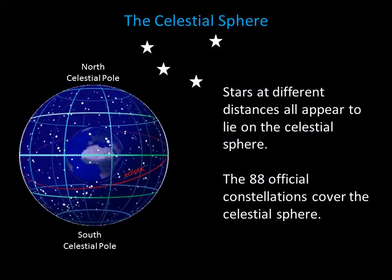To talk about the positions of objects in the sky, we're going to use a conceptual model. We're going to pretend Earth is enclosed in a clear plastic sphere and all the stars and their constellations are projected onto that sphere. We call this model the celestial sphere.